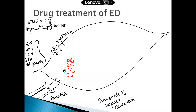When nitric oxide binds to guanylyl cyclase, guanylyl cyclase will convert GTP into cyclic GMP. Cyclic GMP is a very active molecule that is formed when guanylyl cyclase converts GTP into cyclic GMP.